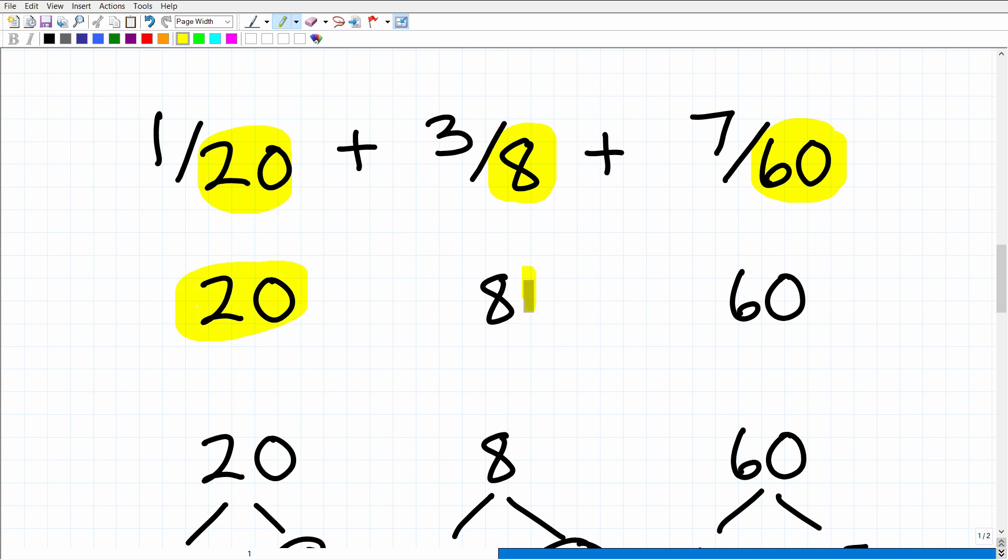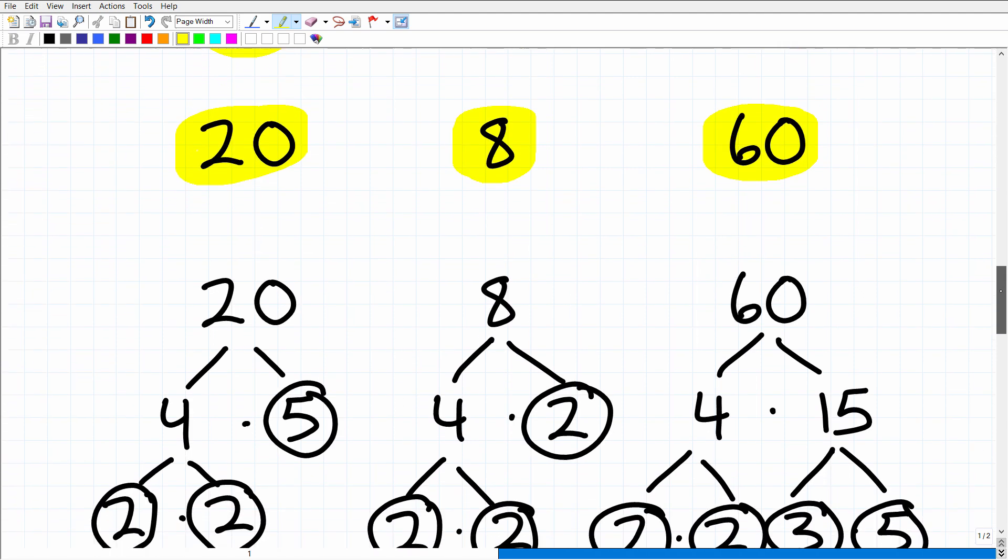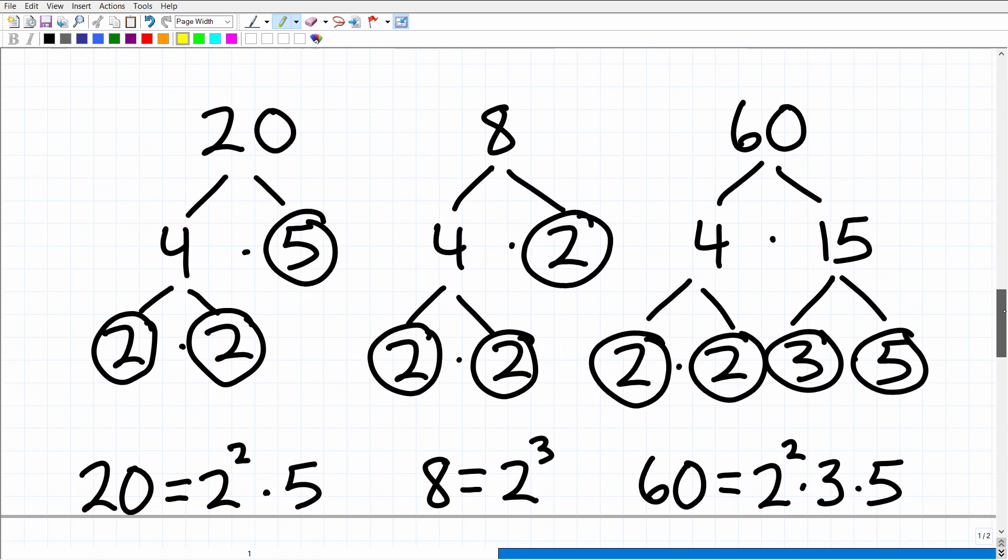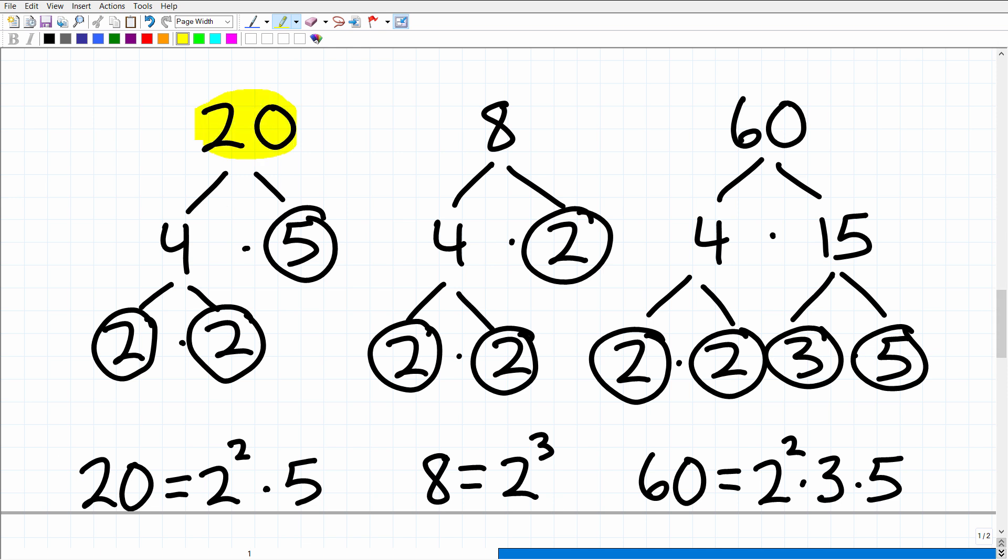All right, so we've got to take these three numbers, and what you want to do is prime factor each of these numbers. And a great way to factor any number is to use a factor tree. So let's go ahead and take a look at this work right here. Of course, you can see I already done the work. So here's 20, here's 8, and here's 60.